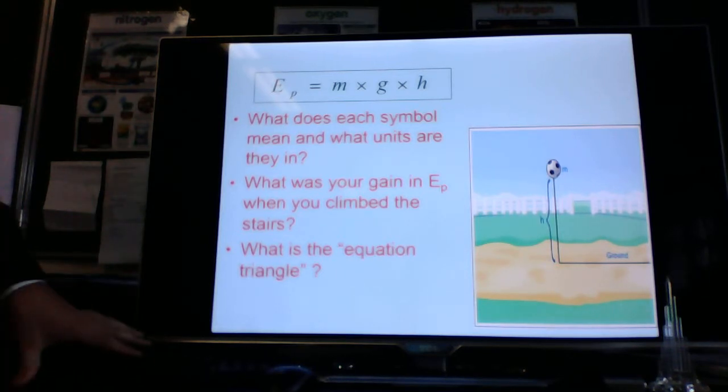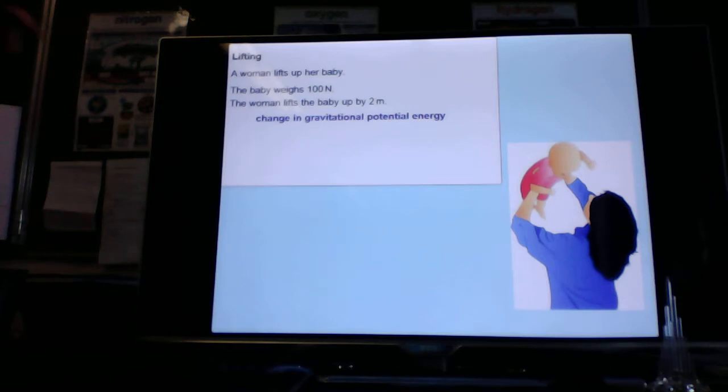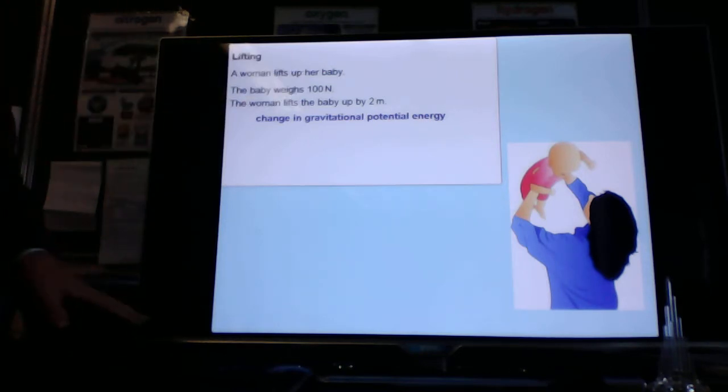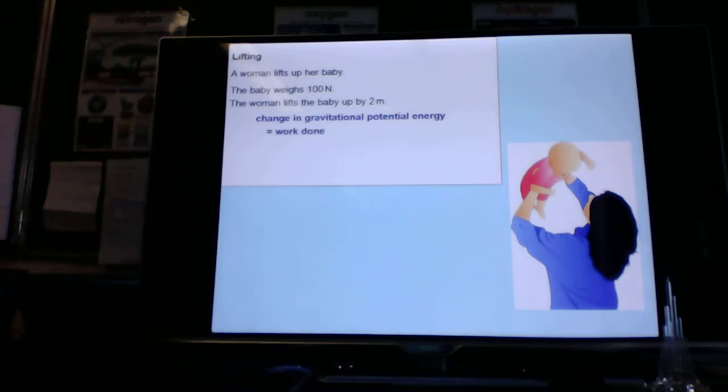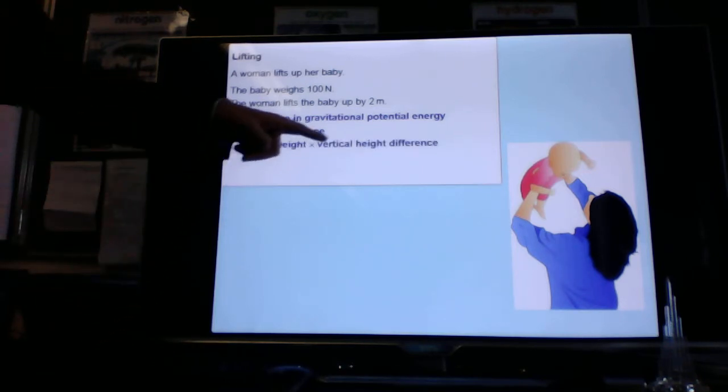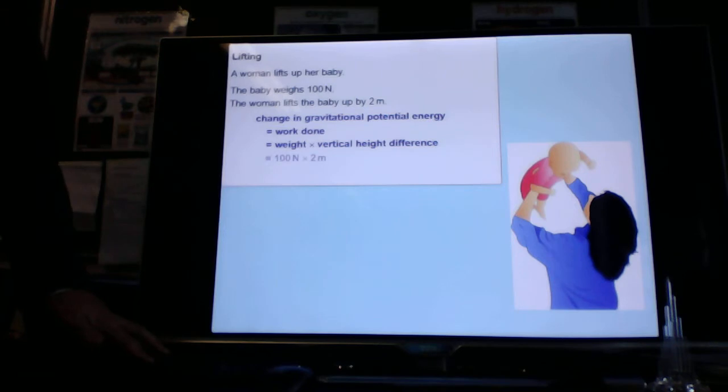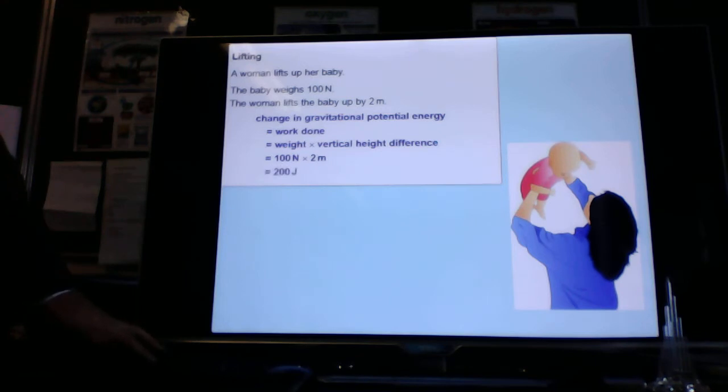So what is the equation triangle for this? But if we have an example, if a woman lifts up her baby and the baby has a weight of 100 newtons, lifts the baby up 2 metres. The change in gravitational potential energy is equal to the work done. It's equal to the weight times the vertical height difference. 100 newtons times 2 metres. And that is equal to 200 joules.